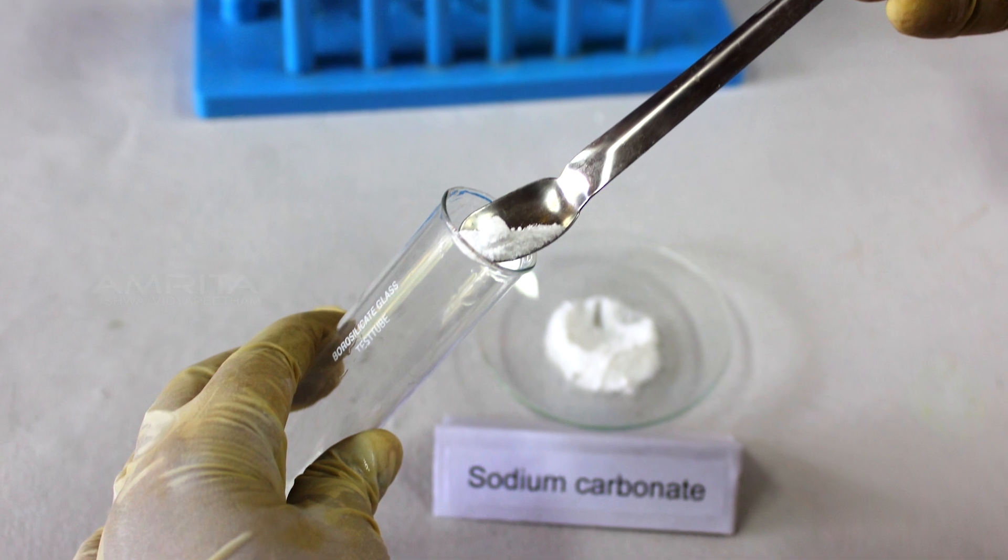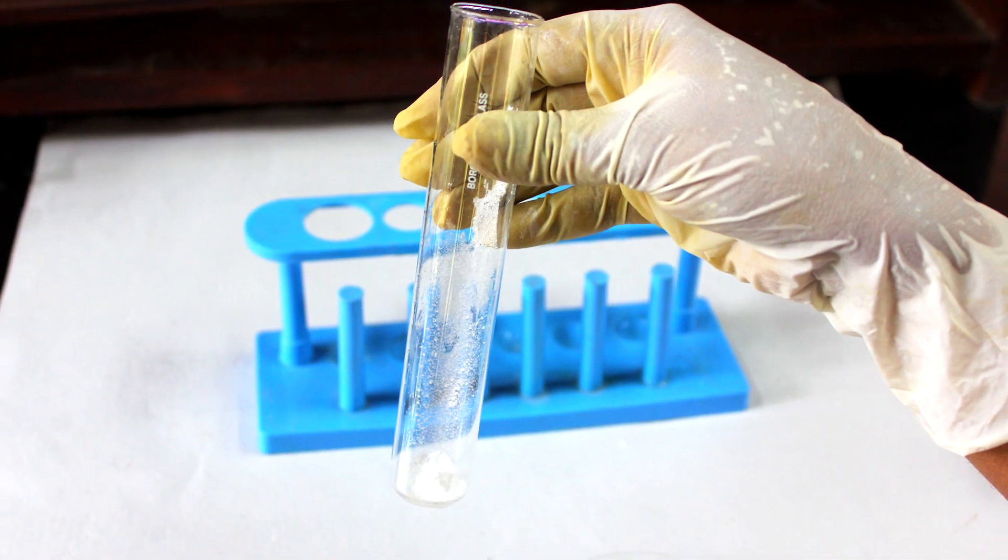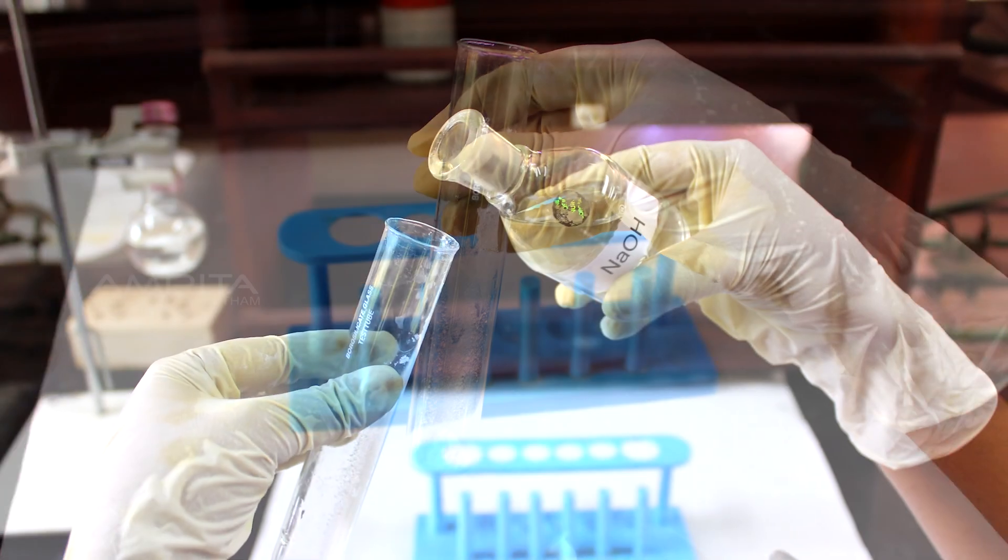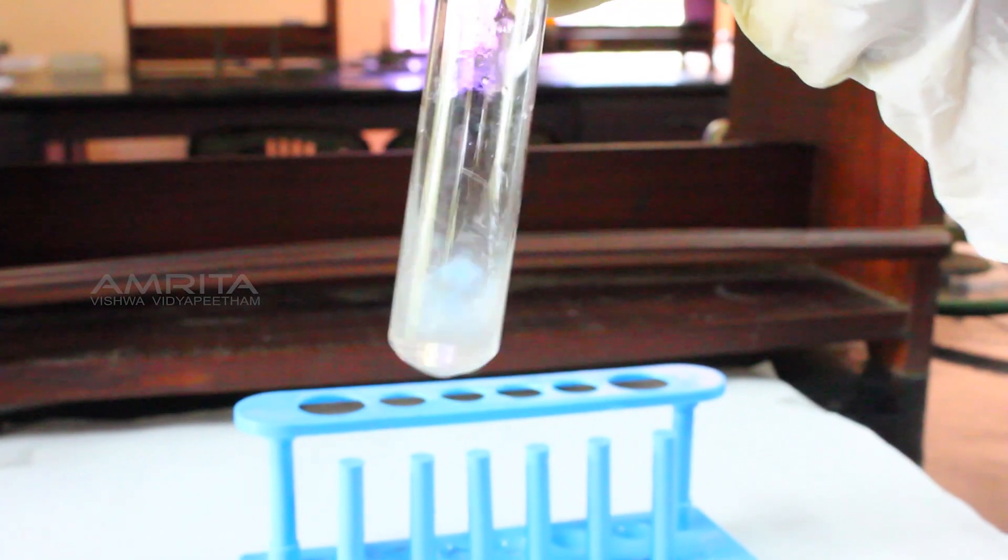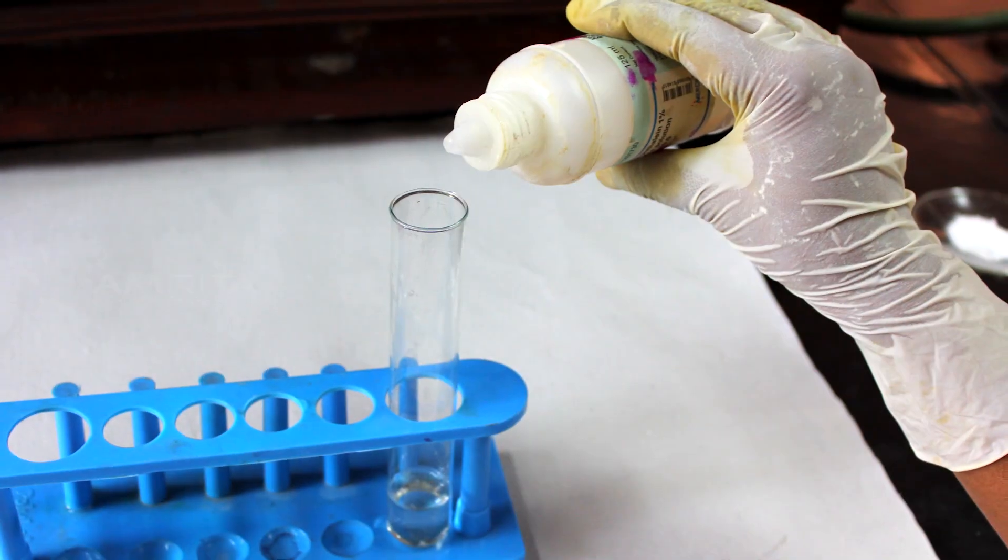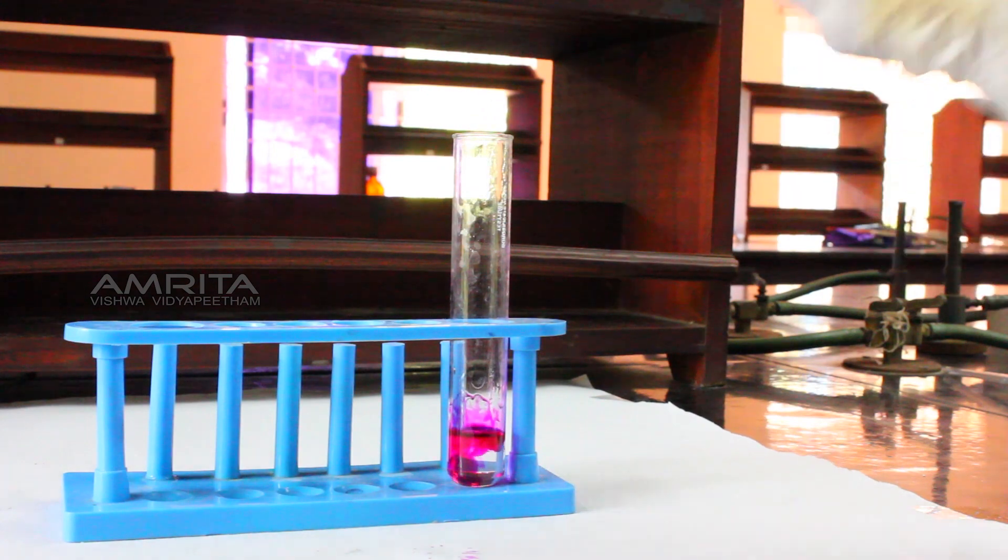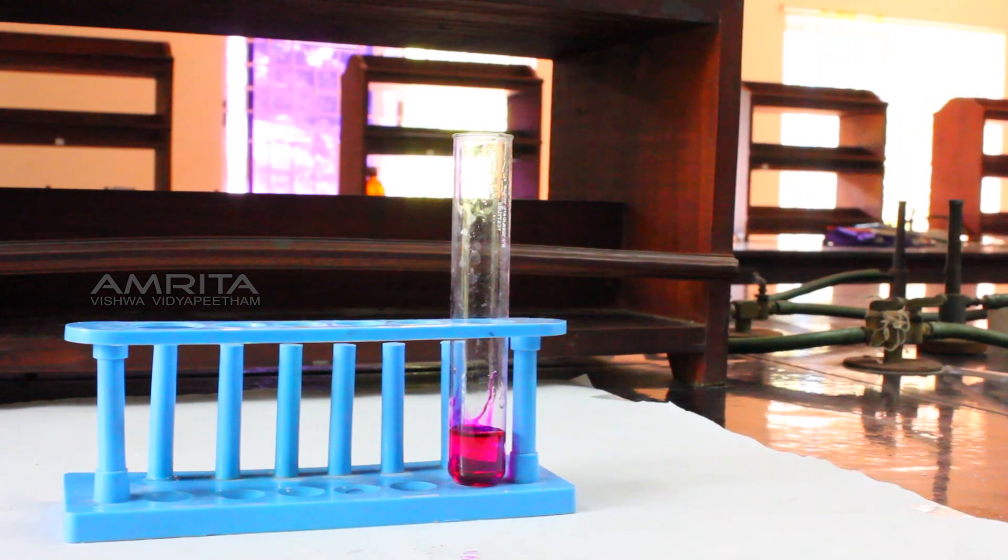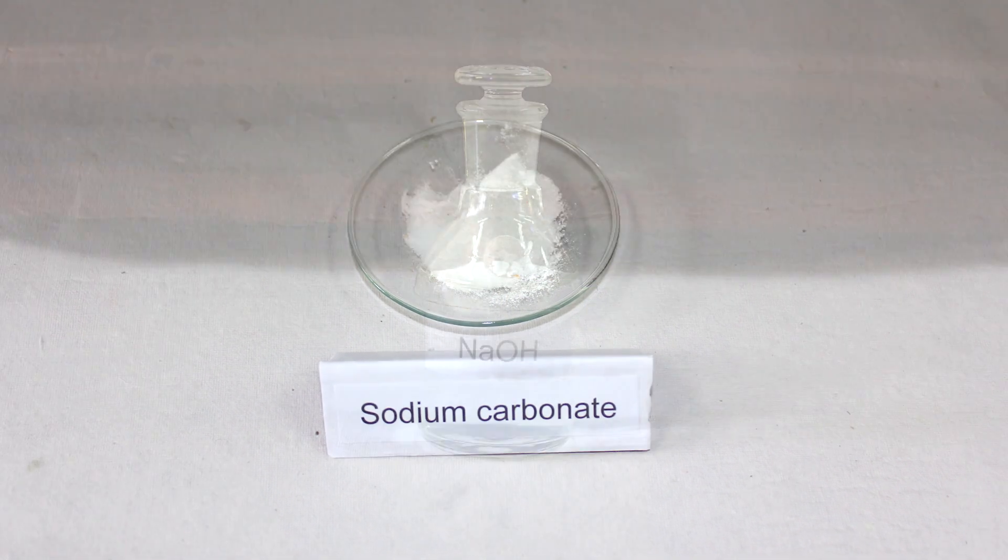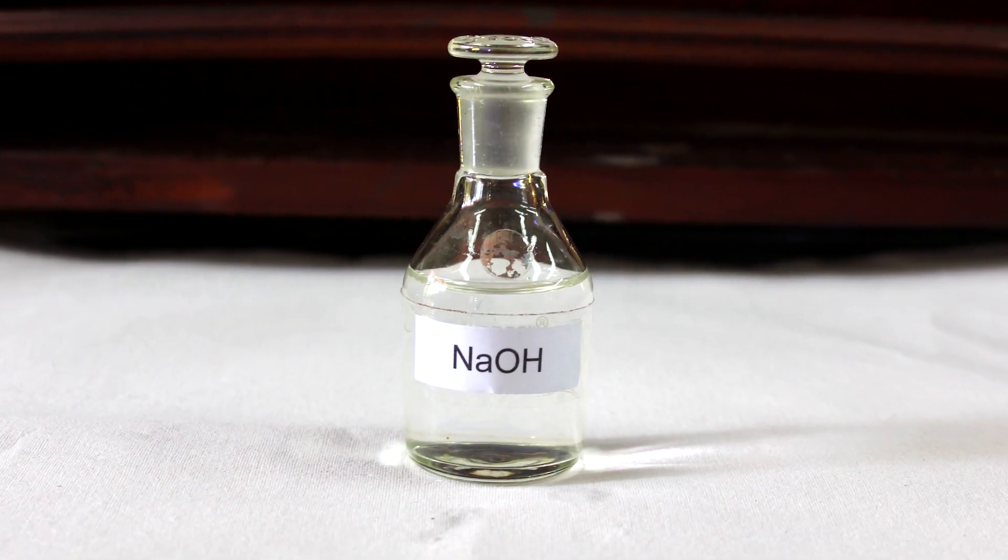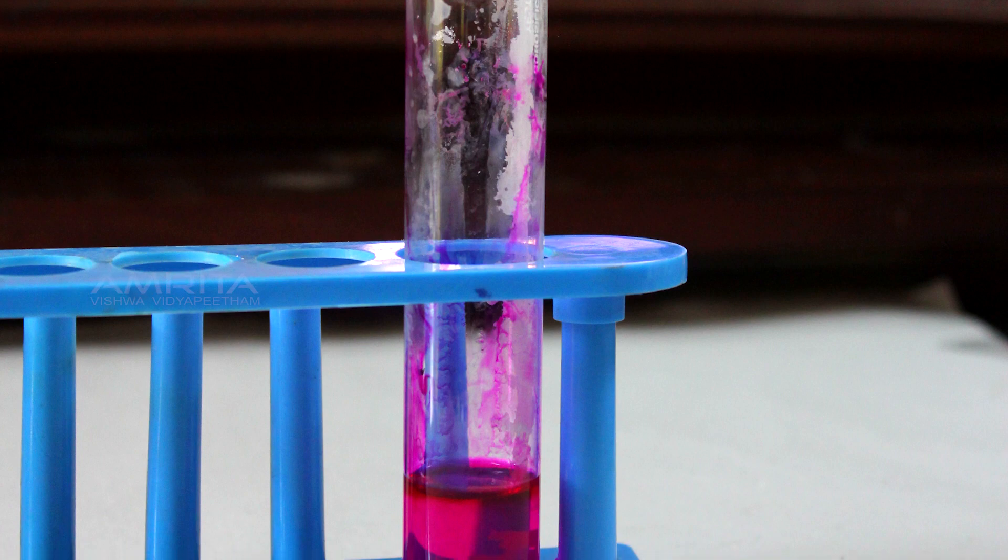Now, add a small amount of sodium carbonate in a boiling tube and add NaOH solution into it. Then shake the boiling tube well. Add a few drops of phenolphthalein into it. You can observe that the color of this solution turns pink, which indicates that both sodium carbonate and NaOH do not react but form an alkaline solution.